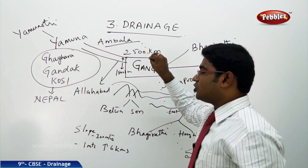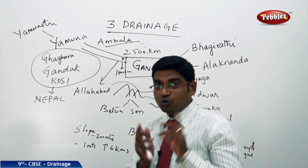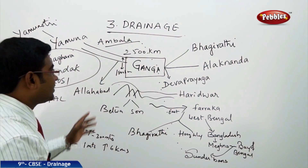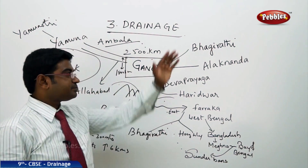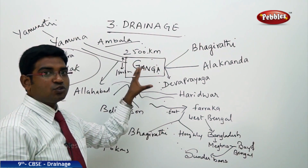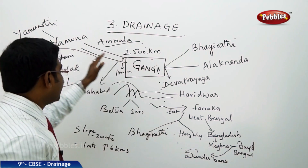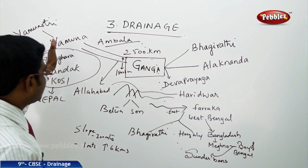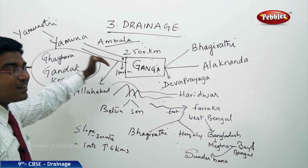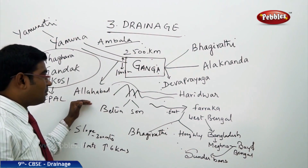All these tributaries come and join River Ganga at Allahabad. So we have two sets: Bhagirathi and Alaknanda joining at Devaprayag for Ganga's birth, and Yamuna running parallelly from Yamunotri Glacier until it joins at Allahabad, along with the Nepal rivers Ghaghra, Gandak, and Kosi.